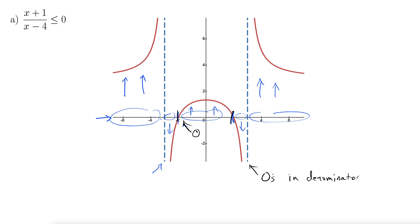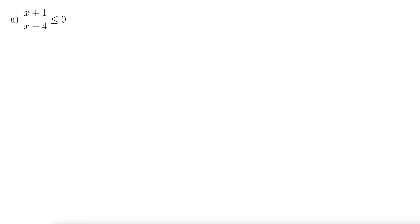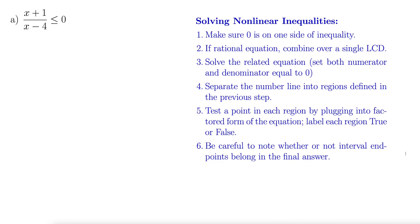Let's return to the original: x plus one over x minus four is less than or equal to zero. Step one — make sure zero is on one side of the inequality. Zero is on the right side by itself, so that's good. Step two — if it's a rational equation, combine over a single LCD. Here we already have a single denominator, so that's good to go.